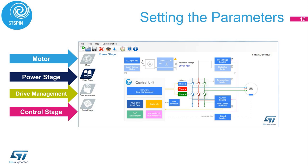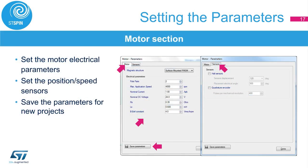On the left side, there are four icons representing submenus: Motor Parameters, Power Stage, Drive Management, and Control Stage. If you don't find your motor in the preset list, you can create your own motor with its characteristics. Click on the Motor Symbol and set the parameters according to your application, including Number of Pole Pairs. Those parameters will be saved for the current project and future use. If you click on Save Parameters, this new motor will appear in the preset list. If you switch over to the Sensors tab, you can find the configuration parameters for Hall Sensors and Quadrature Encoder.